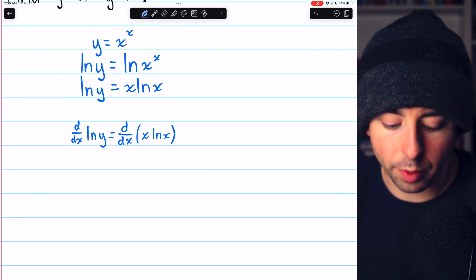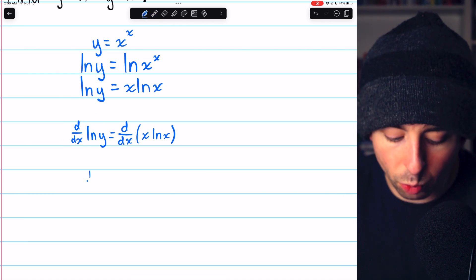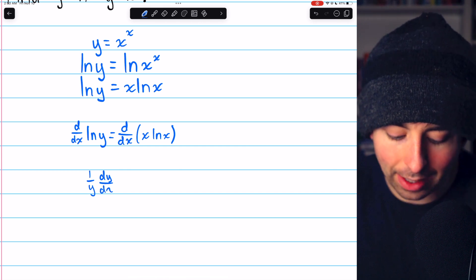So on the left, the derivative of log y is 1 over y, but then we have to multiply by dy dx as well.